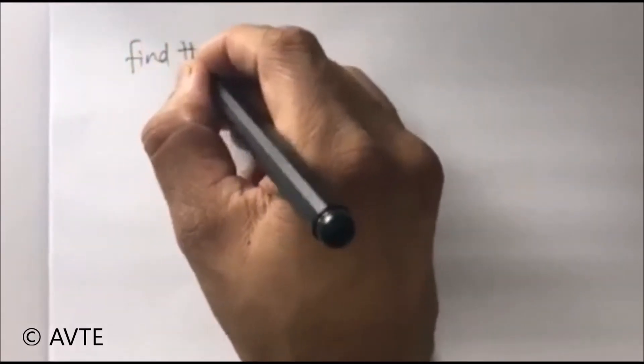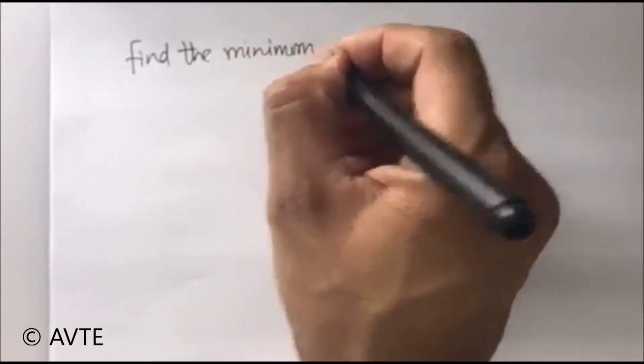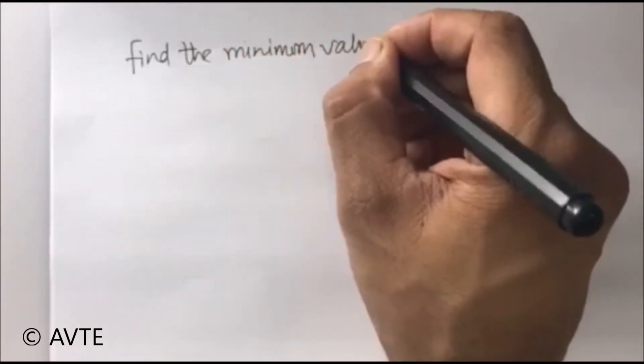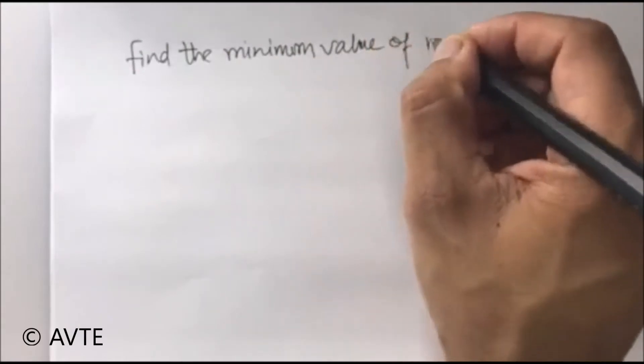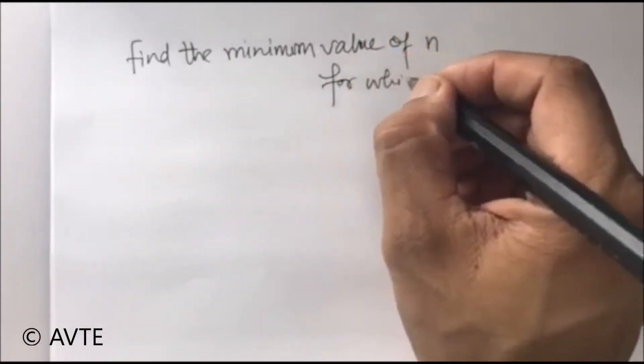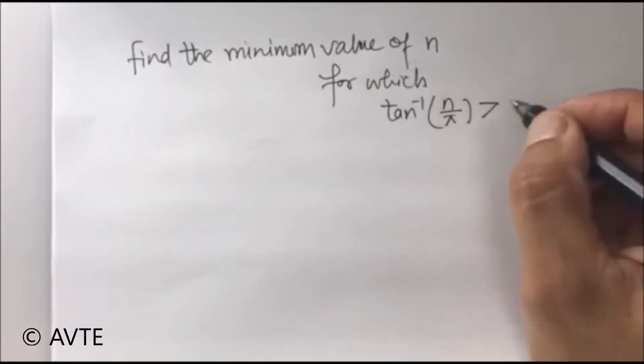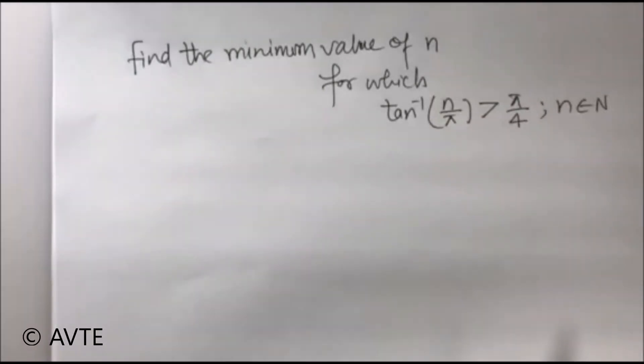Find the minimum value of N for which tan inverse of n upon pi is greater than pi by 4 and n is belonging to natural number.